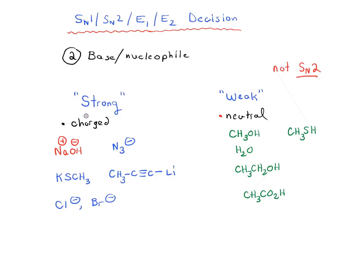If you see that it's strong, so it's charged, you can rule out not SN1 or E1. And actually, instead of not SN2, we can also rule out E2 here. Not SN2, not E2, not SN1 or E1. So that divides it up quite neatly. If you're looking at a charged base or nucleophile, it's not going to be SN1 or E1. If it's a neutral base or nucleophile, it's not going to be SN2 or E2.